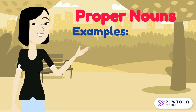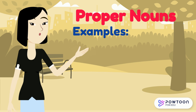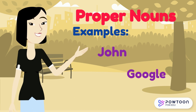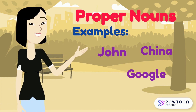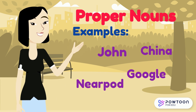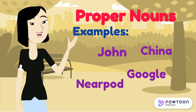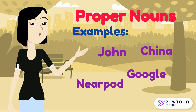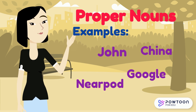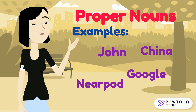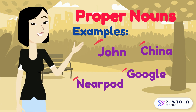Examples of proper nouns are John, Google, China, and Nearpod. It is very important to take note that proper nouns begin with capital letters, like the examples you see here.